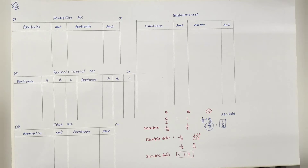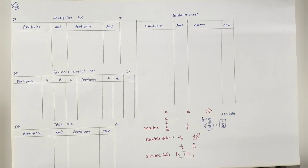C will bring proportionate capital - it's a new adjustment. हमारे लिए नया है, इसके पहले हमने कभी ऐसा कुछ solve नहीं किया था. C कितनी capital ला रहा है? Proportionate capital - यानि कि कितनी ला रहा है, वो यहाँ पर बताया नहीं है. वो हमको find करना है.